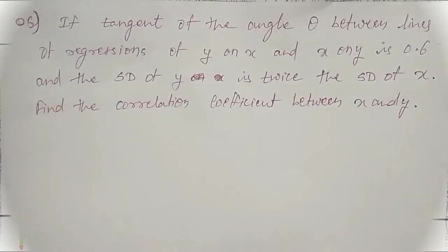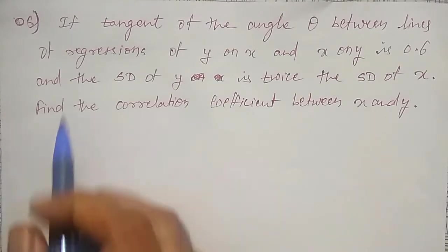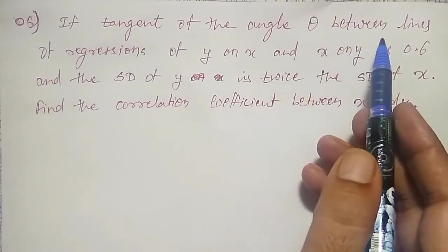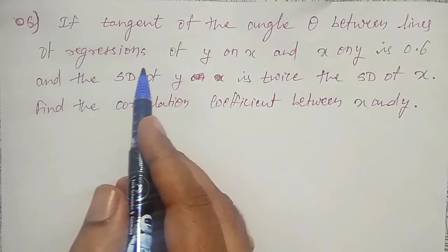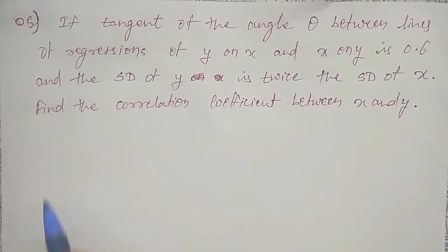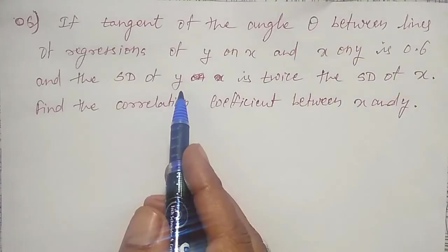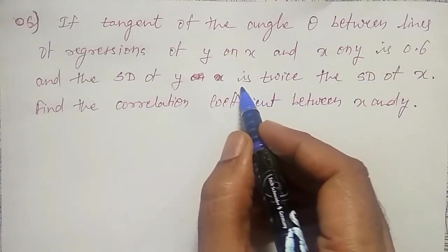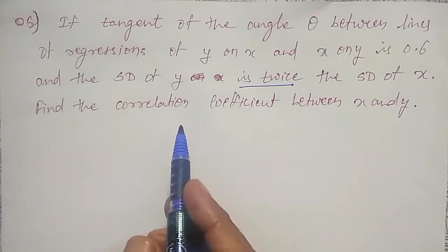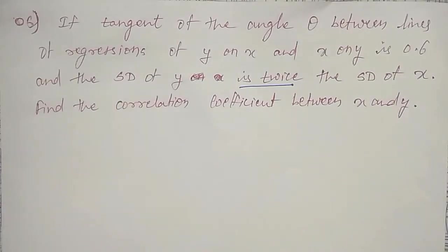One simple example on how to find the correlation coefficient. If tangent of the angle theta between lines of regressions y on x and x on y is 0.6, and the standard deviation of y is twice the standard deviation of x, find the correlation coefficient between x and y.